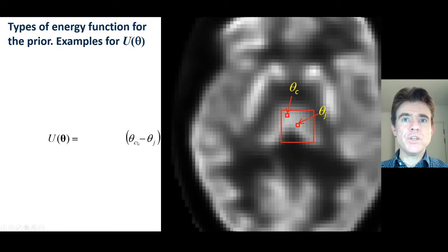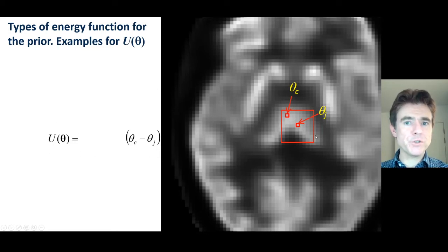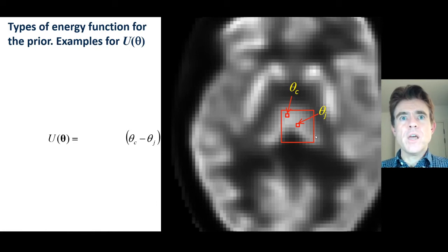If those pixels are different, we say that corresponds to a high energy, because they would be different, for example, due to a lot of noise present.